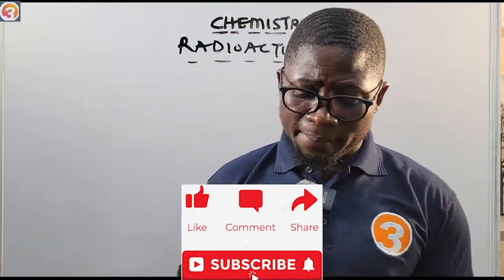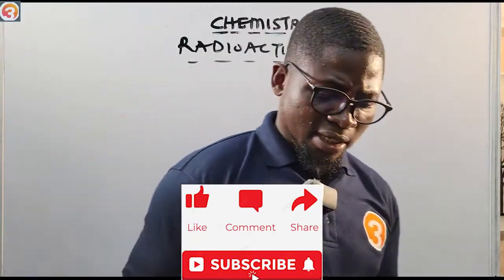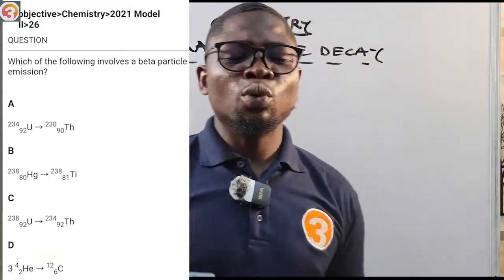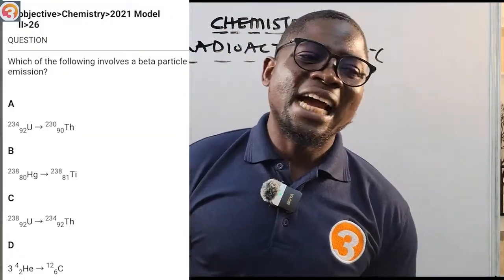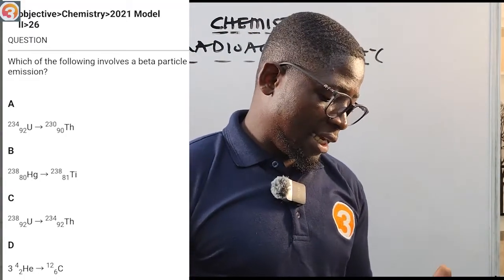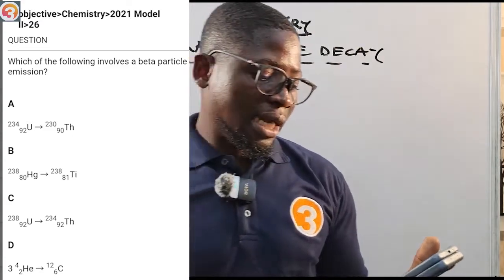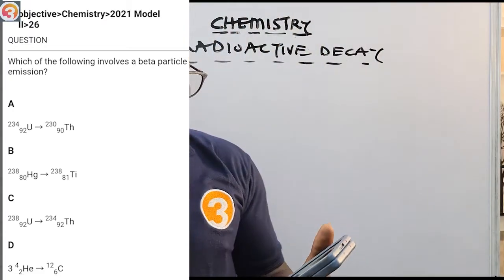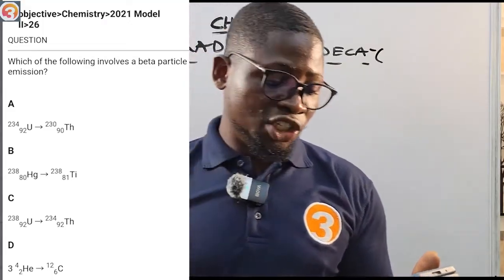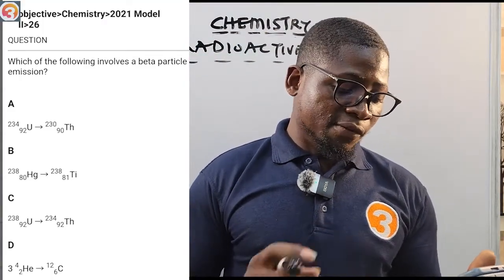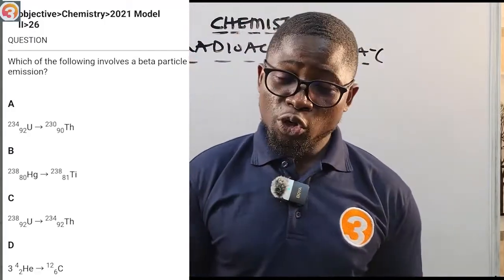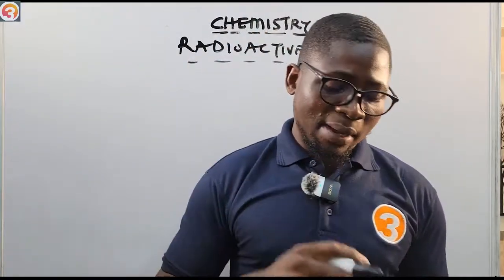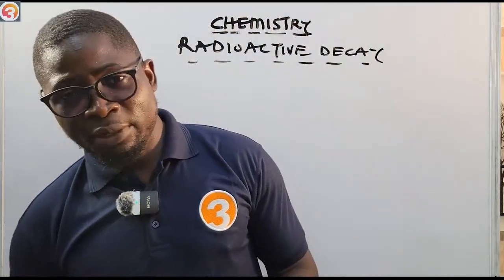This tutorial is brought to you by the O3 School app. Let us see a question about radioactive decay from the app before we continue. This is a 2021 question, number 26. It says: which of the following involves a beta particle emission? I want to come back to this question at the end of the class so that you understand what they mean by beta particle emission and alpha particle emission.